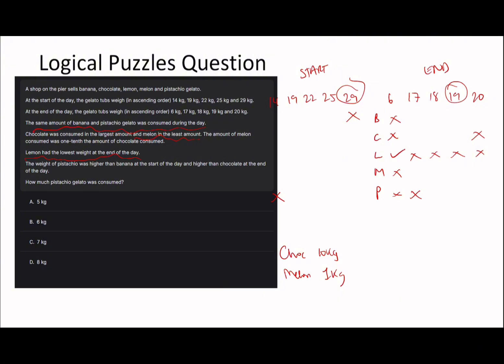I'm going to say the chocolate was 29 at the start and at the end of the day it was 19. If we tick and cross here, then I'm going to say the melon was 18.